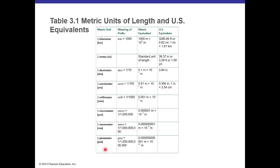We also have the picometer, which is 10 to the minus 12 meters. For anything smaller than a meter: decimeters are 10 to the minus 1, centimeters are 10 to the minus 2, millimeters are 10 to the minus 3, micrometers are 10 to the minus 6, nanometers are 10 to the minus 9, and picometers are 10 to the minus 12.